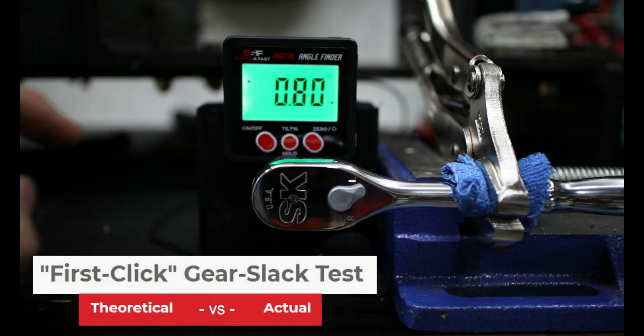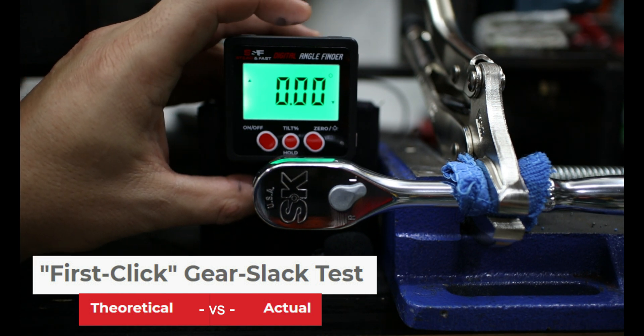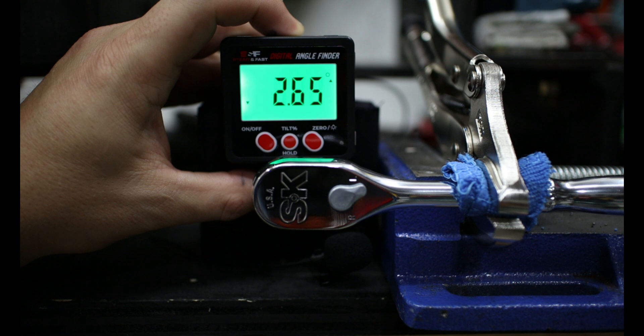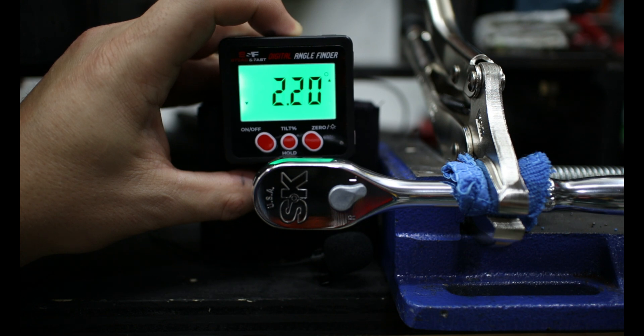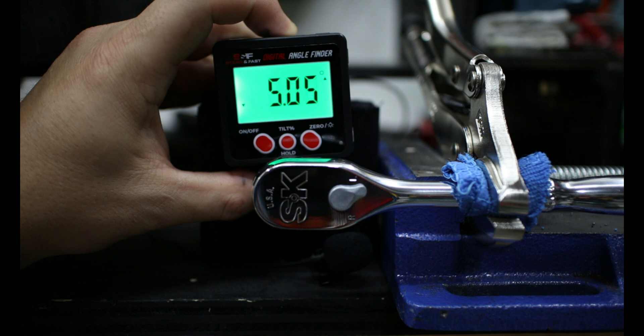The first click gear slack test measures the theoretical versus the actual degrees of movement. The SK tools ratchet is a 90 tooth ratchet, so it theoretically has four degrees of movement needed to move the handle to engage the next tooth. We can see that we cleared things out, started, and we're going to move slowly here. We're going to see just how much movement it takes to move that ratchet to the next click.